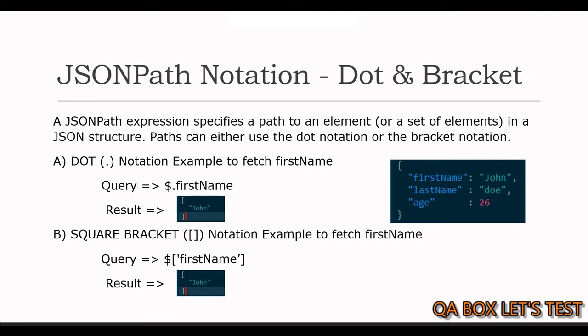A JSON path expression specifies a path to an element or a set of elements in a JSON structure. JSON path uses special notation to select the specified property in a parent object. As I mentioned earlier, there are two styles of notation: dot and bracket.